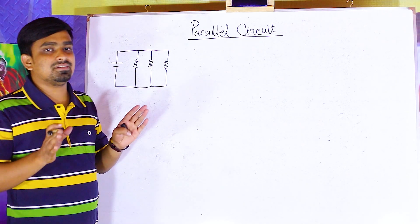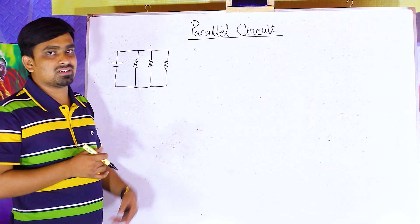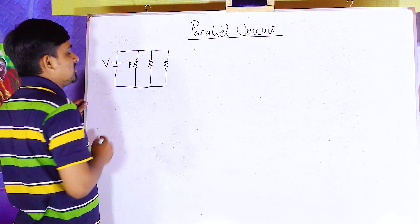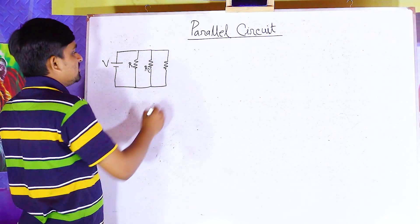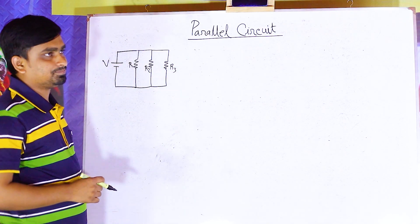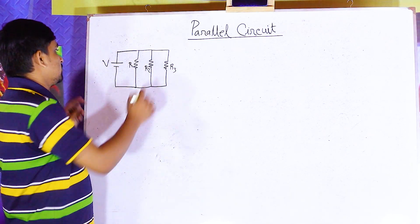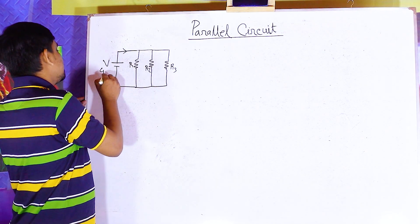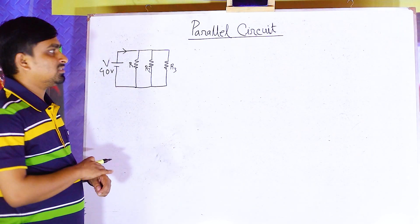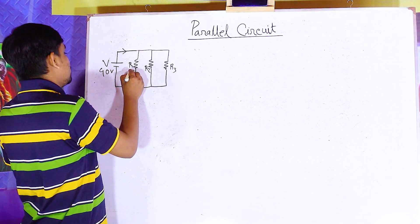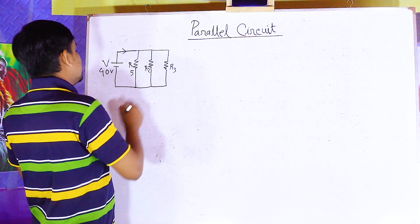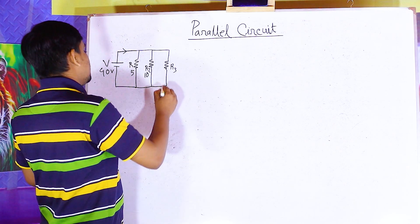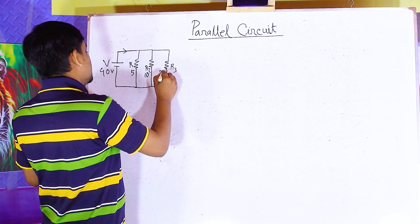I am looking at the inter-resistive loader across the parallel circuit. We have a voltage source, with first resistance, second resistance, and third resistance. The total voltage is 40 volts, the first resistance is 5 ohm, the second resistance is 10 ohm, and the third resistance is 20 ohm.